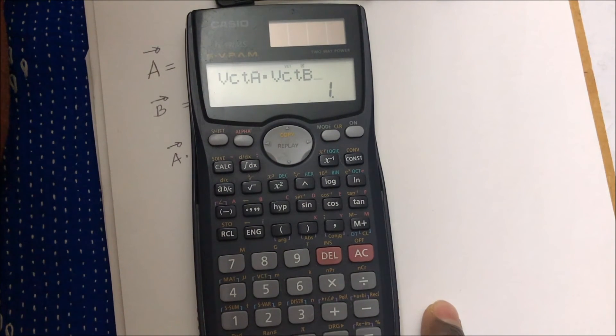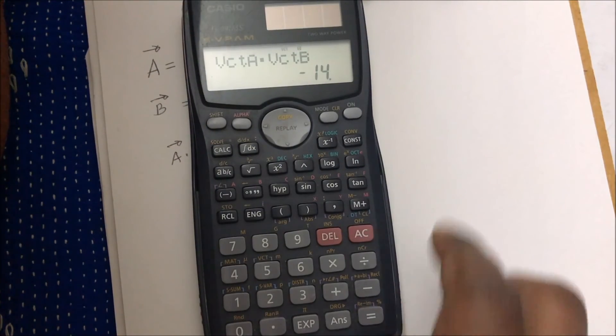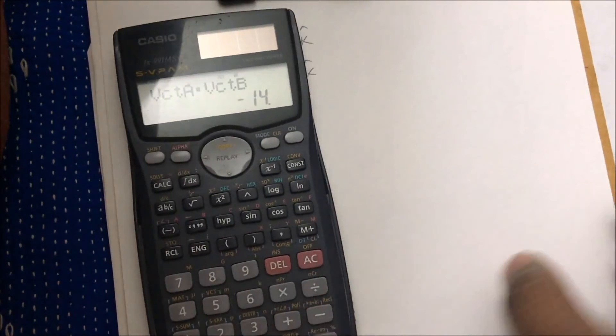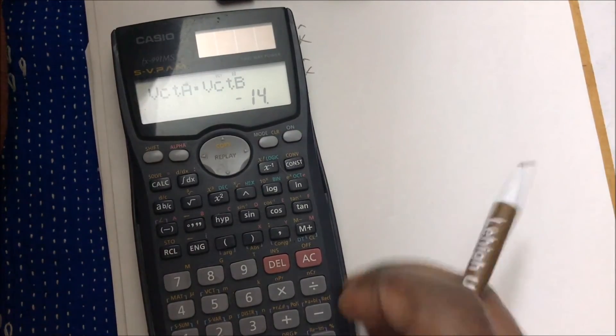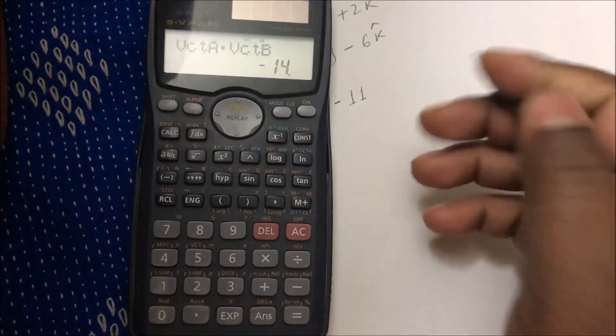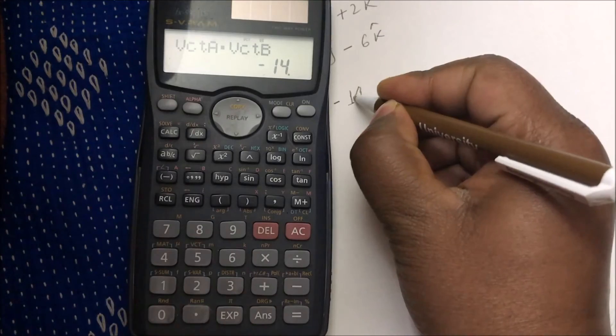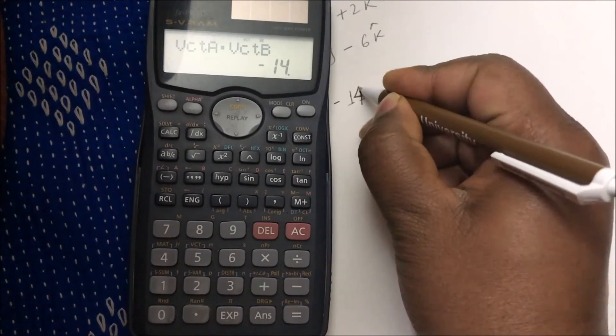Similarly, vector B. Here I have written vector A dot vector B. So just I will press equal button and here's my answer. So I think if I don't do the mistake, it should be negative eleven.